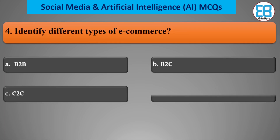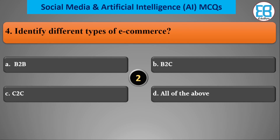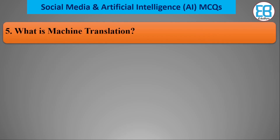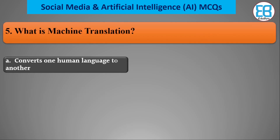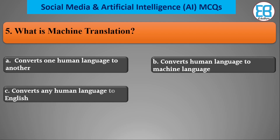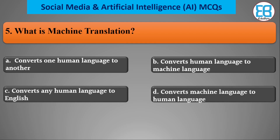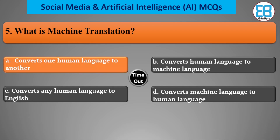There are different types of e-commerce, and the correct option is all of the above. What is machine translation? Machine translation converts human language into another language. The correct option is converting human language into another human language.